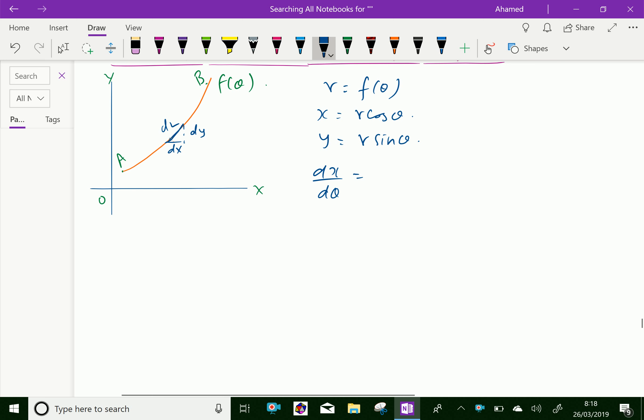Now, let us square both and add. That is, dX by d theta whole square plus dY by d theta whole square equals r dash cos theta minus r sine theta whole square plus r dash sin theta plus r cos theta whole square.